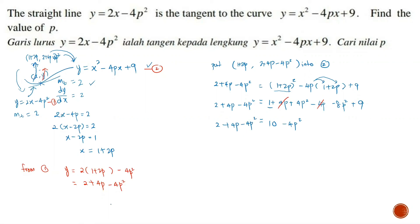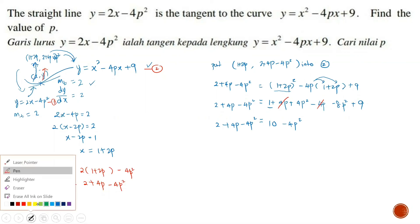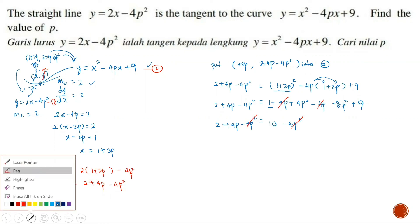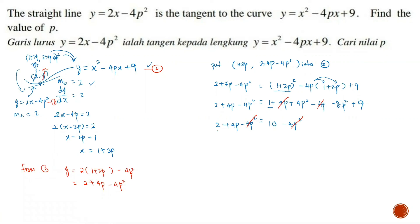We have minus 4p squared on both sides, so we can cancel those. What is left is 2 plus 4p equals 10. Therefore, 4p equals 8, and p equals 8 divided by 4, which is 2. So we have found the value of p. That's it — thank you very much.